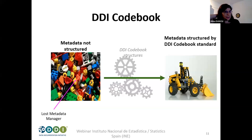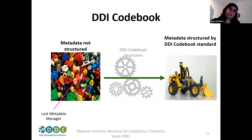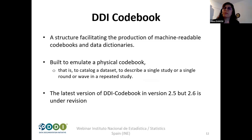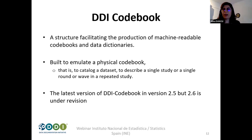DDI Codebook — think of a LEGO example: on the left, a lost metadata manager in the middle of a lot of unstructured metadata; on the right, metadata structured by the DDI Codebook standard. DDI Codebook is a structure that facilitates the production of machine-readable codebooks. It's built to emulate a physical codebook — to catalog a dataset, to describe a single study, not a repeated study, or a single round or wave in a repeated study. The latest published version is 2.5, but 2.6 is also out there.